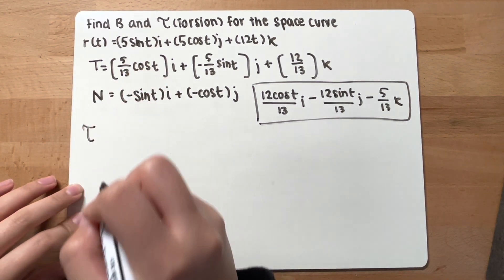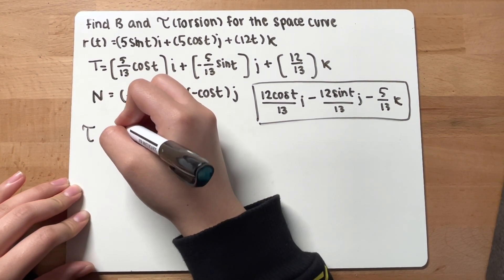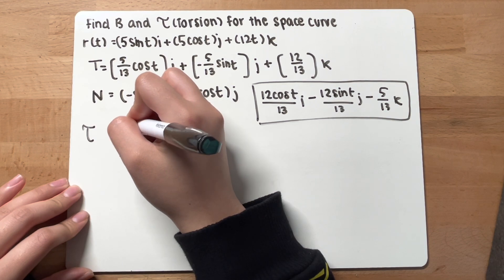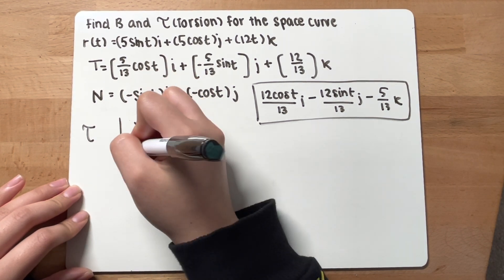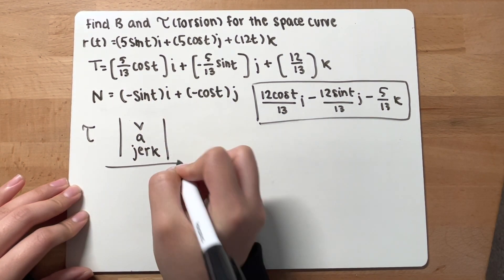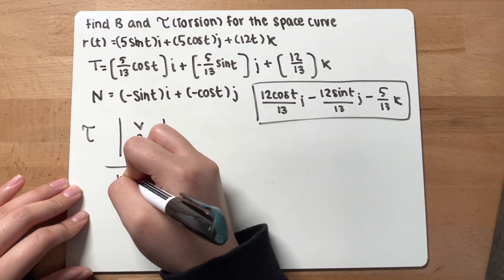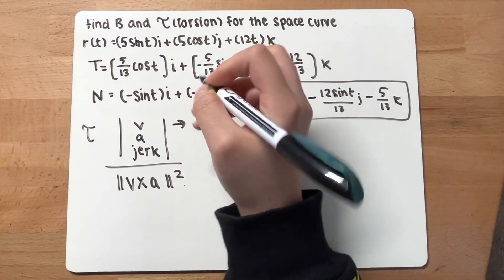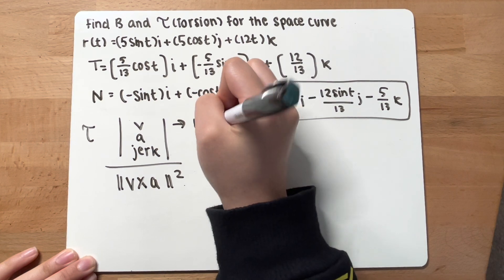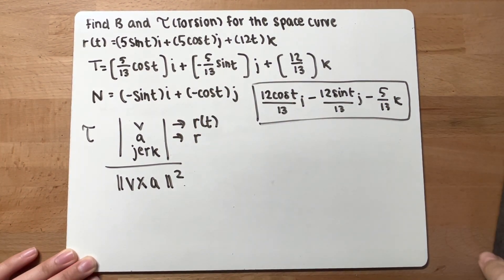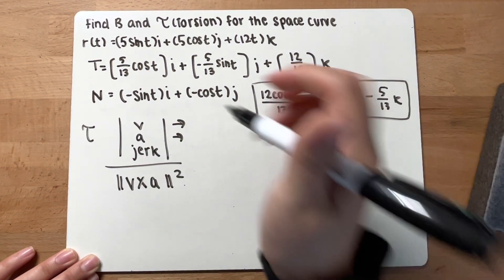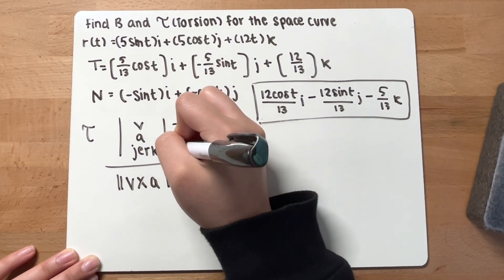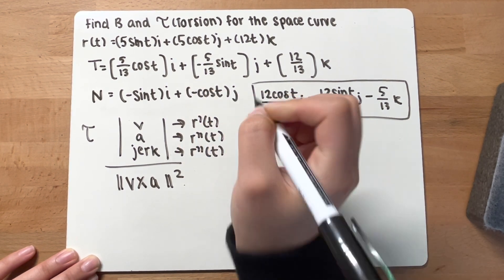This symbol is for torsion — you call it tau. The formula is the cross product of V, A, and jerk over the magnitude of V cross A squared. V is the velocity, which is the derivative of our original function. A is the second derivative, and jerk is the third derivative of our original function.